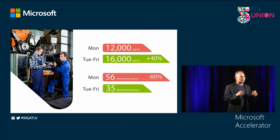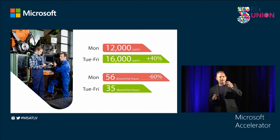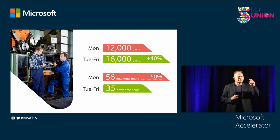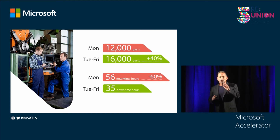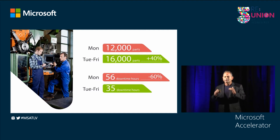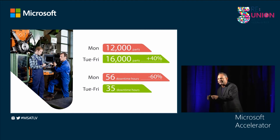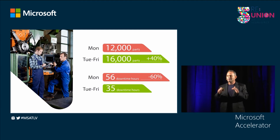For example, at one of our leading aerospace customers, on a work cell of 15 machines, our system highlighted that on average they produce 16,000 parts, while on Mondays they produce only 12,000 parts because of 60% more downtime. We performed a root cause analysis and the customer realized that when he turns on the machines on Monday morning, there is a certain element which often breaks down. So now every Monday morning at 5 o'clock, the shift manager arrives with an electrician, they turn on all the machines and verify that when the operators arrive at 7 o'clock, the machines will be up and running.